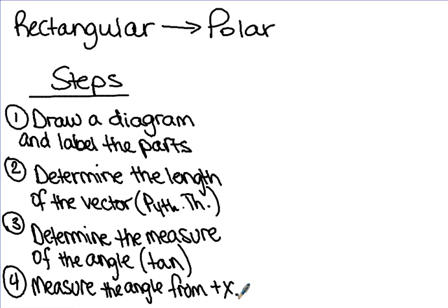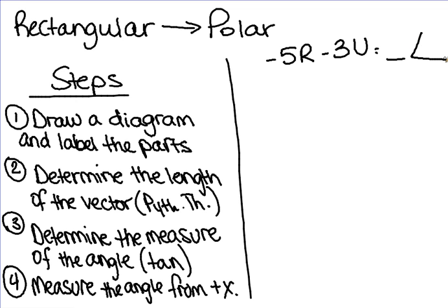So let's do an example of this. We are going to convert negative 5r minus 3u to polar form. Okay, that's where we have a vector with an angle. So we're going to convert these. The first thing that we need to do is draw our diagram. So we're still going to draw a diagram with an x-y-axis. But instead of labeling the vector and our angle, we're going to label our sides. Now we have negative 5r, negative 3u. Remember that the r is like the x-axis, it's right to left. And the u is like the y-axis, it's up and down. So we're actually finding negative 5, negative 3. So our point is going to be right there.